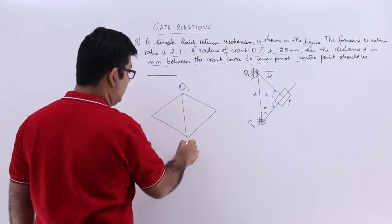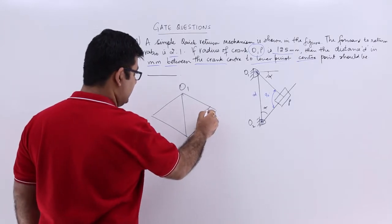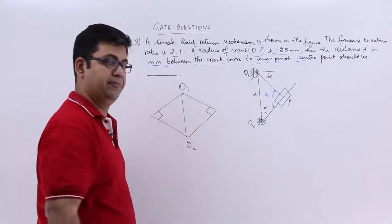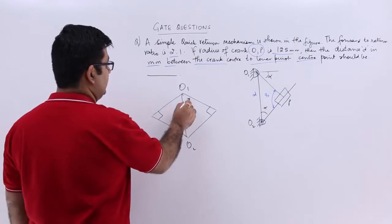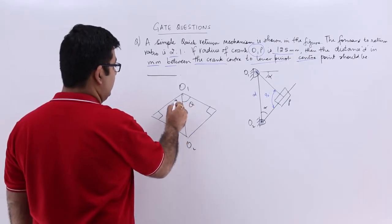So this is O1, this is O2 and this is 90 and this is also 90. Let us say this angle is theta and this is also theta.